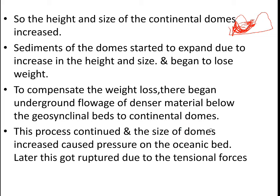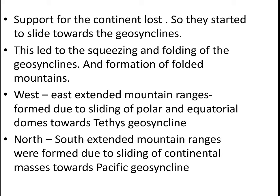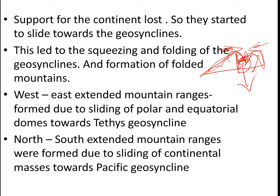This process continued and the dome size increased further, causing pressure on the oceanic bed. Later, this region ruptured due to tensional forces, and with no support, the continents began compressing, causing mountain building. This led to squeezing and folding of the geosynclines and the formation of folded mountains. The west-to-east extension of mountain ranges was formed due to the sliding of polar and equatorial continental masses toward the Tethys geosyncline.